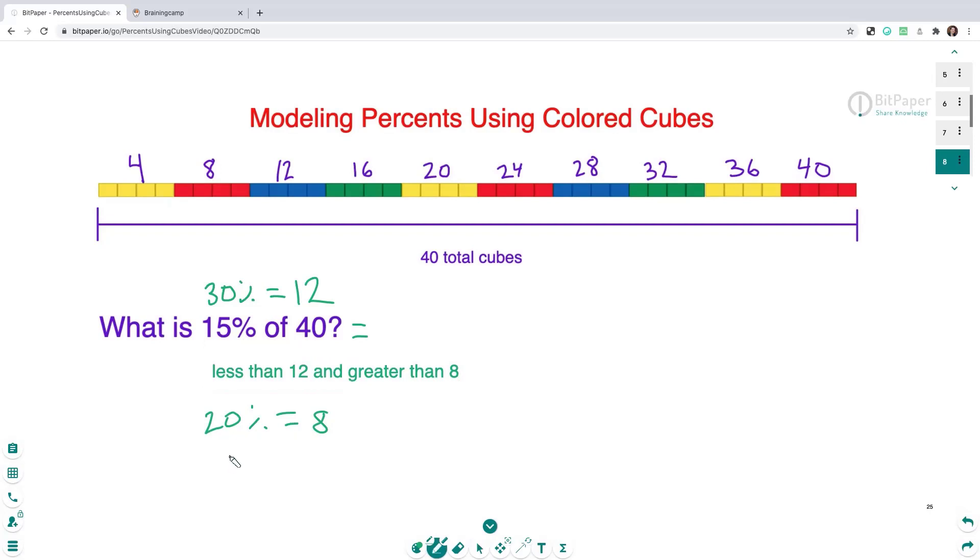Oh, and I also remember that 5%, do you remember how much 5% was? You're right, 5% is only two cubes. So I can use all of this information to help me. I can also go back here and use that 30% to really help me figure out the 15%. So 30% was 12. 15 is half as much as 30. Oh, so that means I'm going to have half as many cubes. So instead of 12 cubes, I'm going to have 6 cubes.